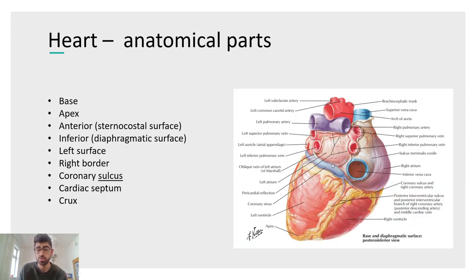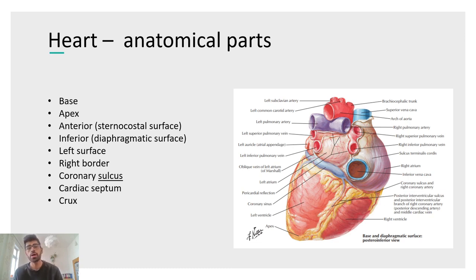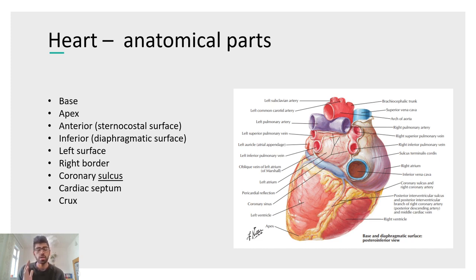The base is where we find the great vessels; the apex is the tapered inferior end. The heart has two surfaces: the anterior surface, also called the sternocostal surface because it contacts the sternum and ribs, and the inferior surface, also called the diaphragmatic surface because it contacts the diaphragm. For borders: on the left side there is a smooth rounded surface, while on the right side there is a sharper, more angular right border.